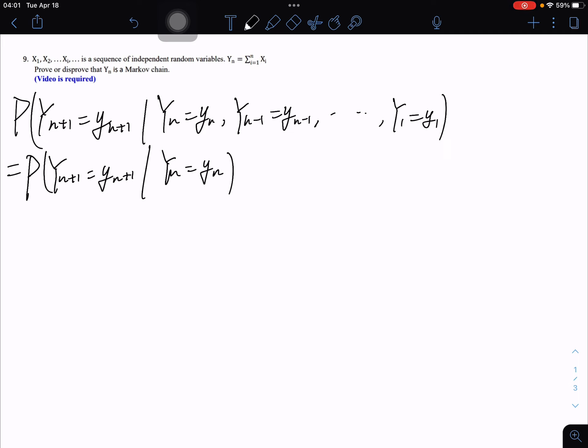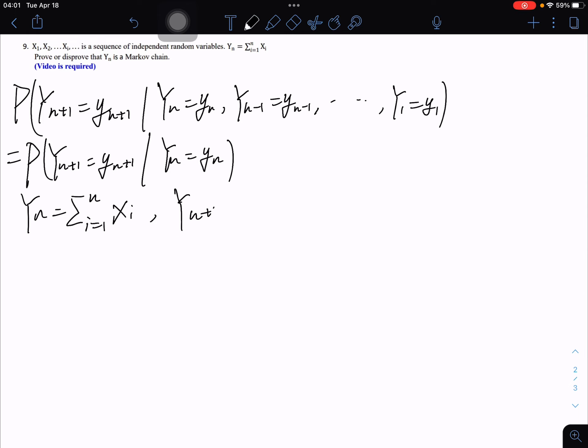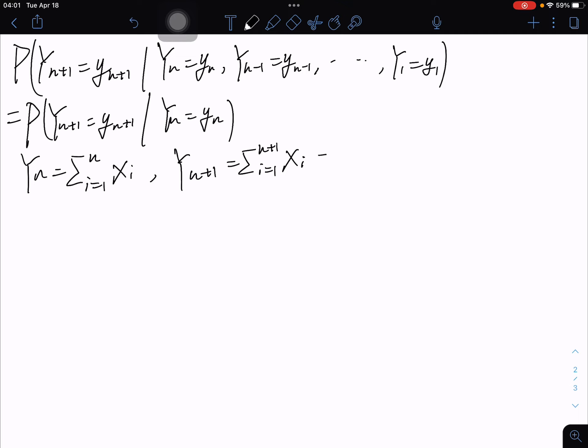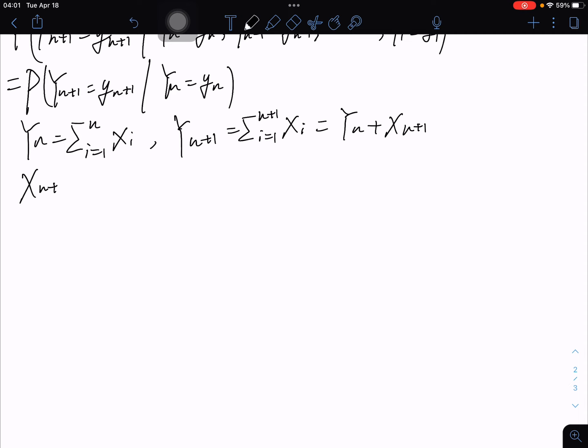Y_n is the sum from i=1 to n of X_i. Y_{n+1} is the sum from i=1 to n+1 of X_i, which equals Y_n plus X_{n+1}. Since X_{n+1} is independent of X_1, X_2, ..., X_n,